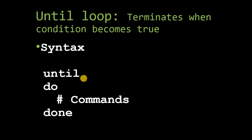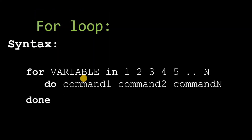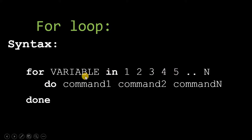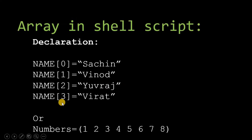Along with the while loop and until loop, we are also going to study the for loop and arrays in this tutorial. The syntax for the for loop is: 'for variable in' a list of elements, an array, or some global variable like files — for each value in that range it will execute the commands. Finally, the loop terminates. An array in shell script is declared by specifying individual elements with their index.